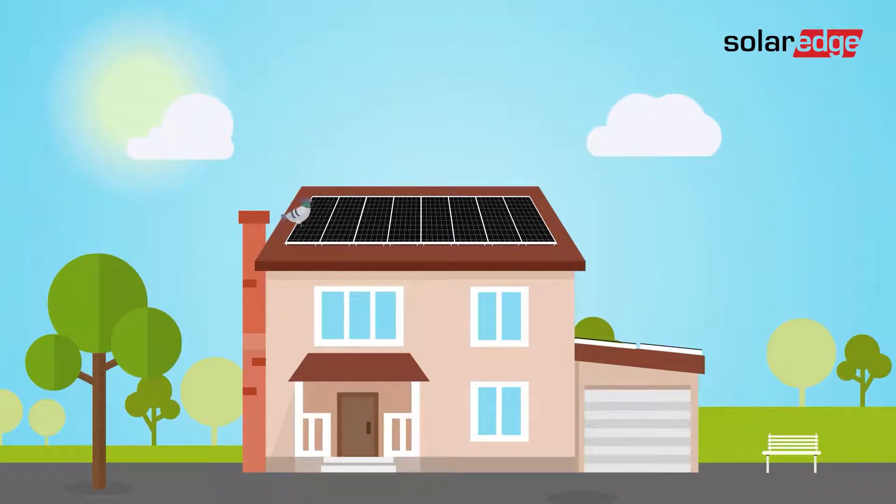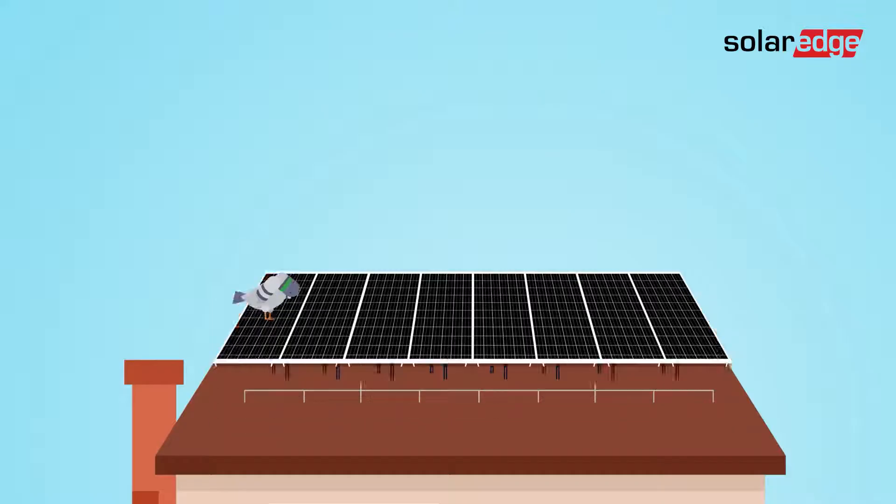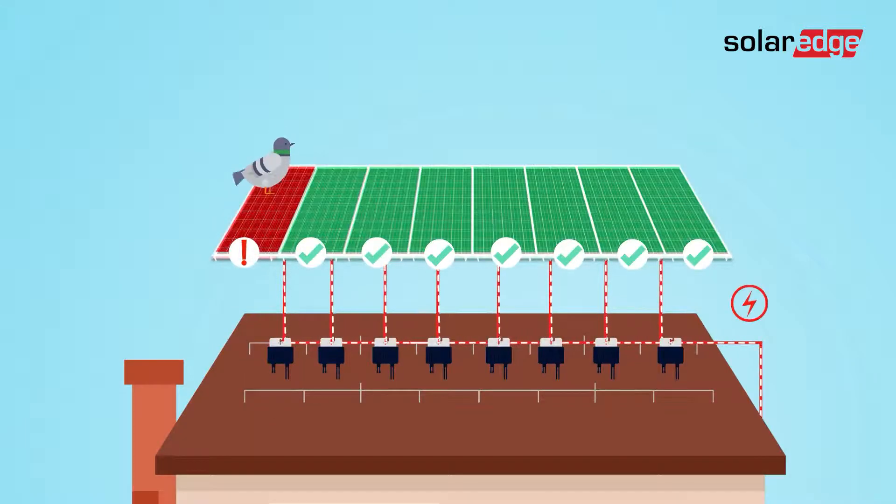When it comes to traditional string inverter PV systems, one rotten apple can spoil the whole barrel. By installing SolarEdge power optimizers that enable greater energy yield for the entire PV system, this is not an issue.